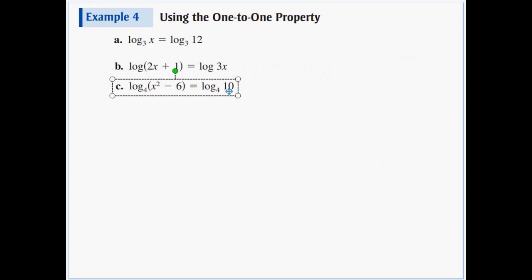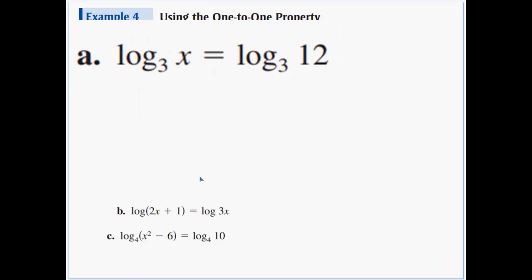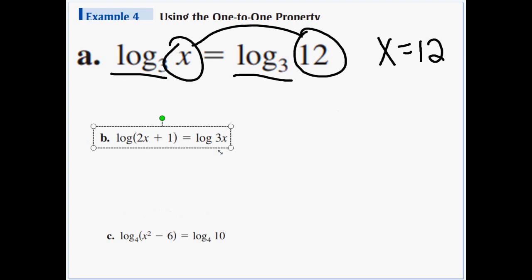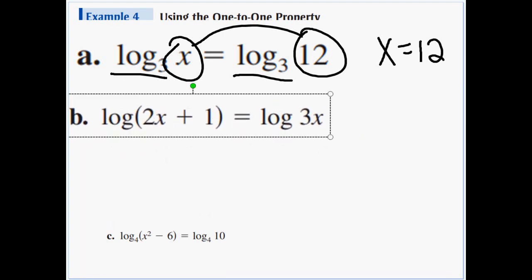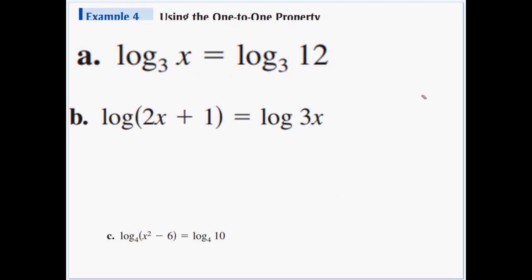Using the one-to-one property: we got log base 3 of x equals log base 3 of 12. They're both log base 3s, so we can set this equal to that: x equals 12. The next one, we don't see a base number, so it's a common log, log base 10. Log is equal to log, so we can set 2x plus 1 equal to 3x. Subtract 2x from each side, now 1 equals x. So x is equal to 1.